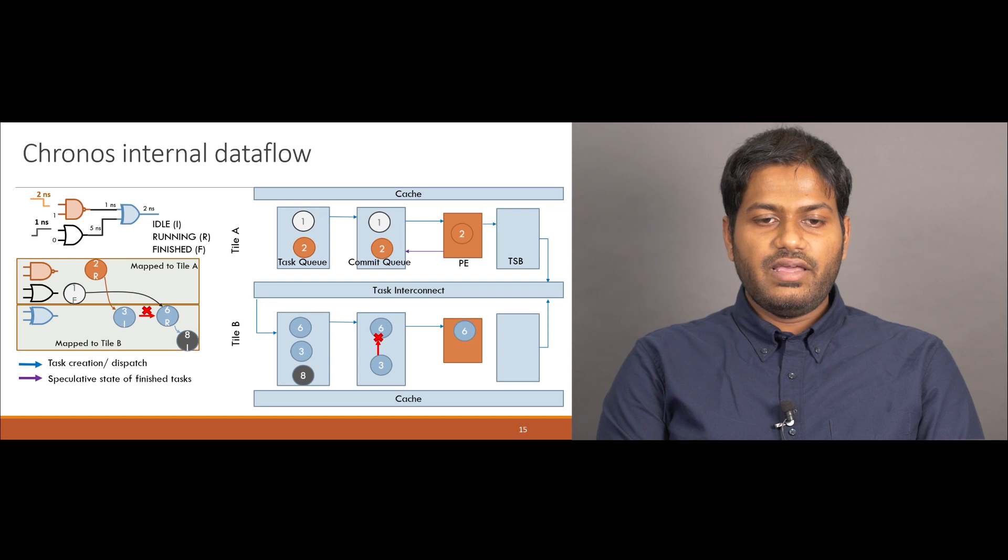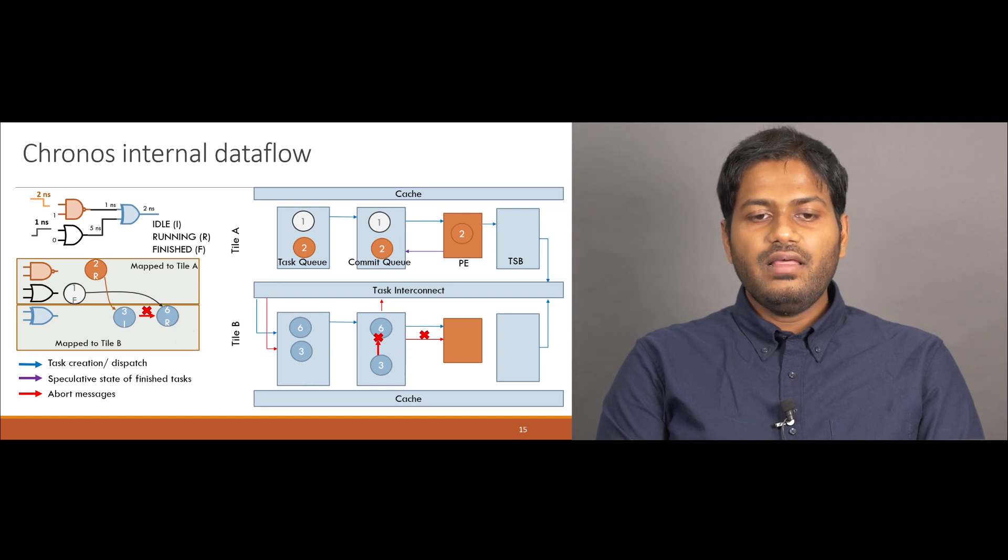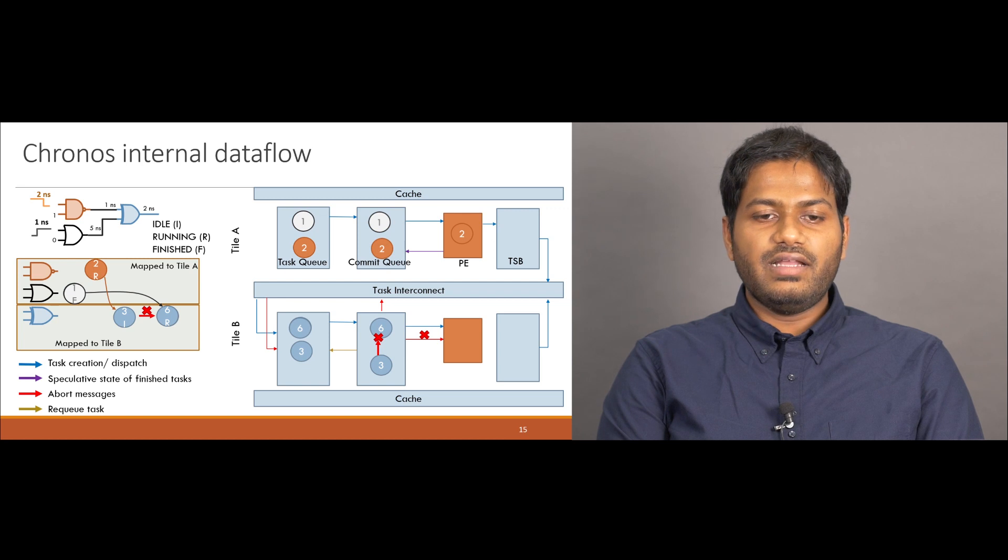Kronos aborts a task in three steps. First, if the task is already running on a PE, it instructs the PE to abort it. Second, if the task has created other children tasks, it creates abort messages that are sent through the task interconnect to the necessary task queue. Finally, the task 6 needs to be requeued back onto the task queue, so that it can be dispatched again later for proper execution.